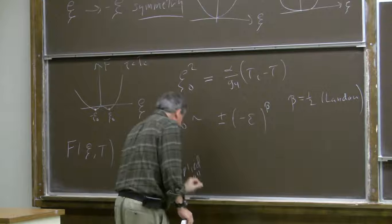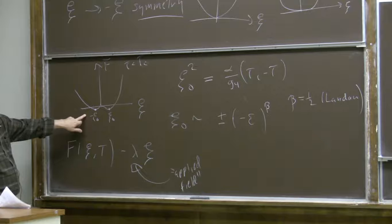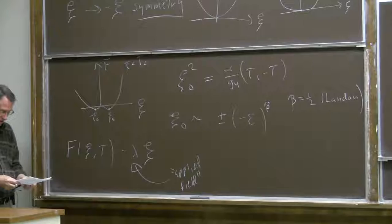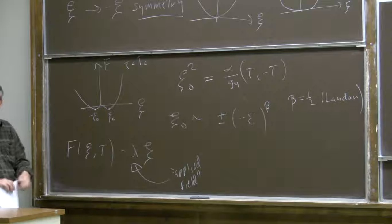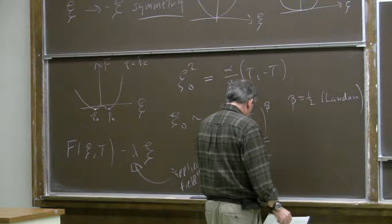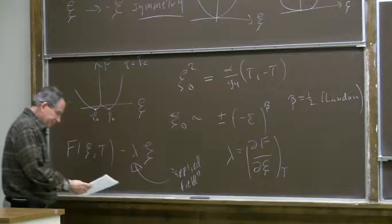That breaks the psi goes to minus psi symmetry, so when we're in the broken-symmetry phase and psi_0 is non-zero, one or the other of these two minima will be favored depending on the sign of lambda. When we fix the order parameter by minimizing this perturbed Helmholtz free energy, then the external field is the derivative of Helmholtz free energy with respect to order parameter with temperature fixed.